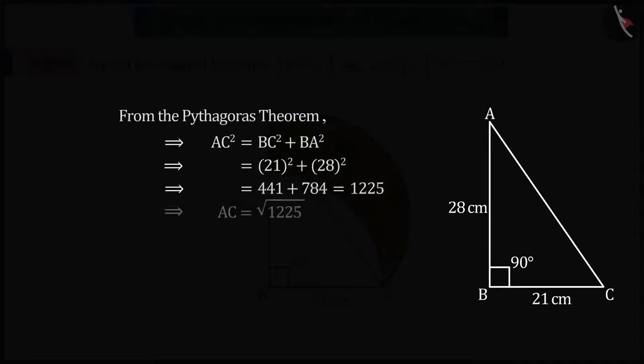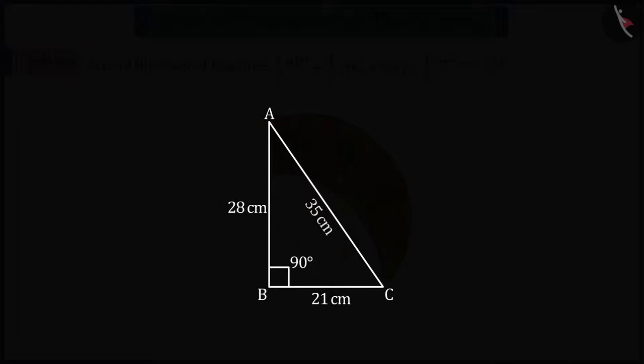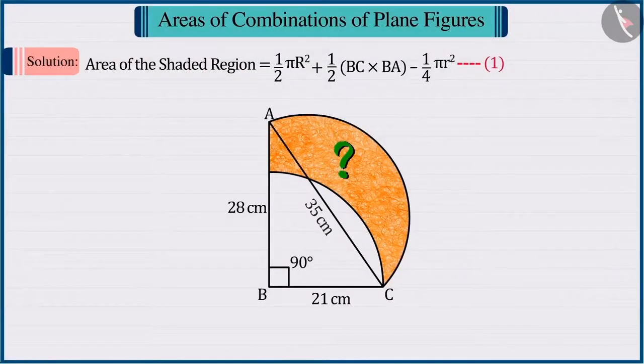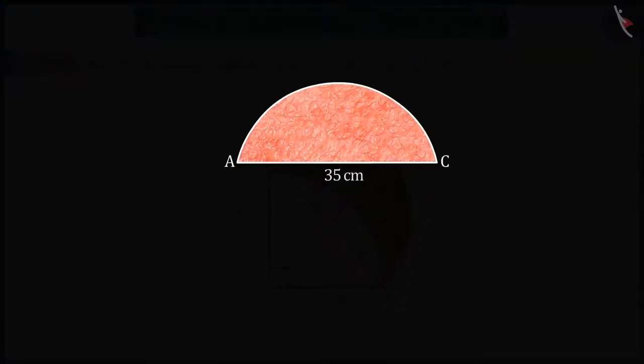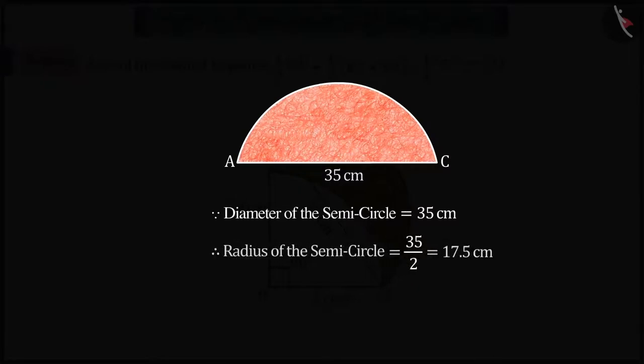we get the value of AC as 35 cm, which is the diameter of the semicircle. So, we can say that the radius of the semicircle is 17.5 cm.